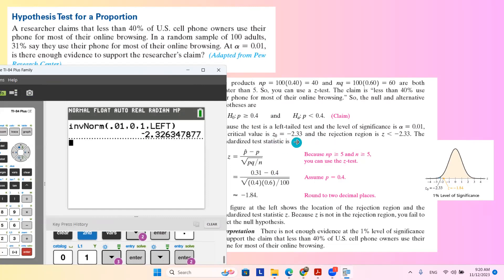This is your Z sub 0, which is the Z score related to the area to the left-hand side.